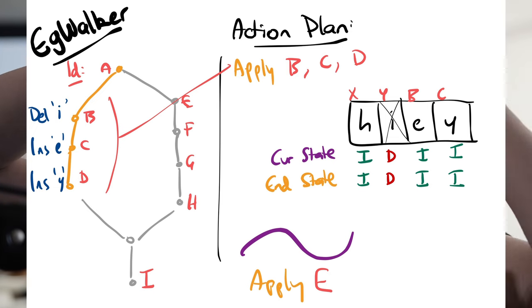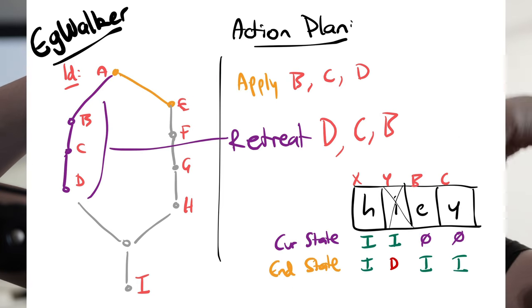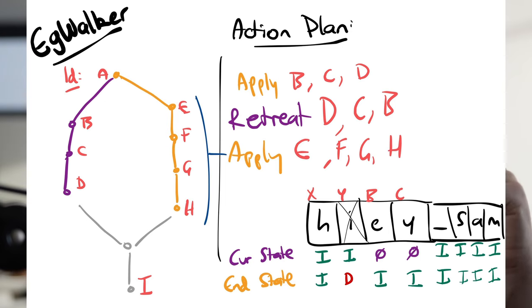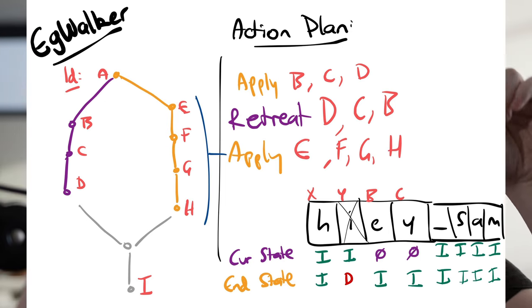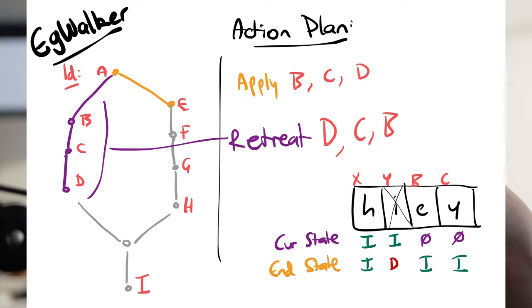We're going to add another state variable called the current state. Eggwalker works by walking up and down the event graph, moving around to apply changes at lots of different locations in the graph. In our case, we want to go down and apply all of my changes, then retreat all of them — undoing the effect of those events — and then apply all of your changes. So it's going to be apply, retreat, and then apply again. When I do the retreat action, I'm actually only going to modify the current state to make it look like the end state would have looked before those changes were applied. So I'm changing it from 'hi' to 'hey': I typed an E and a Y, and I deleted the I.